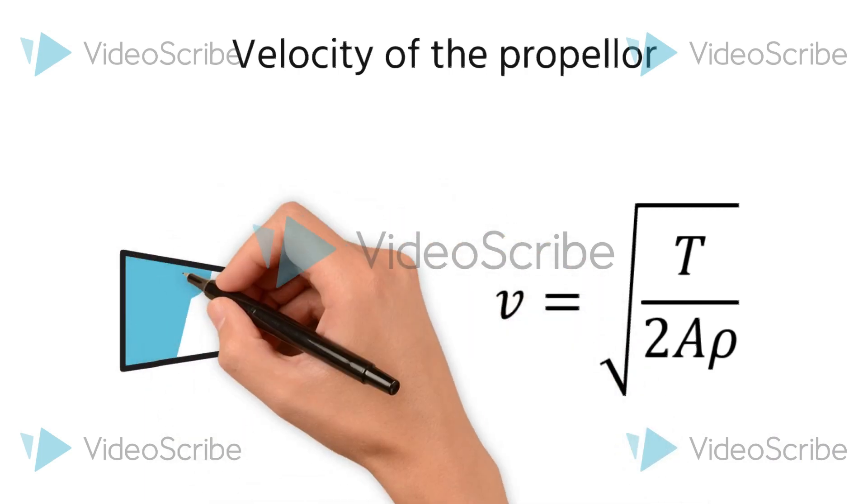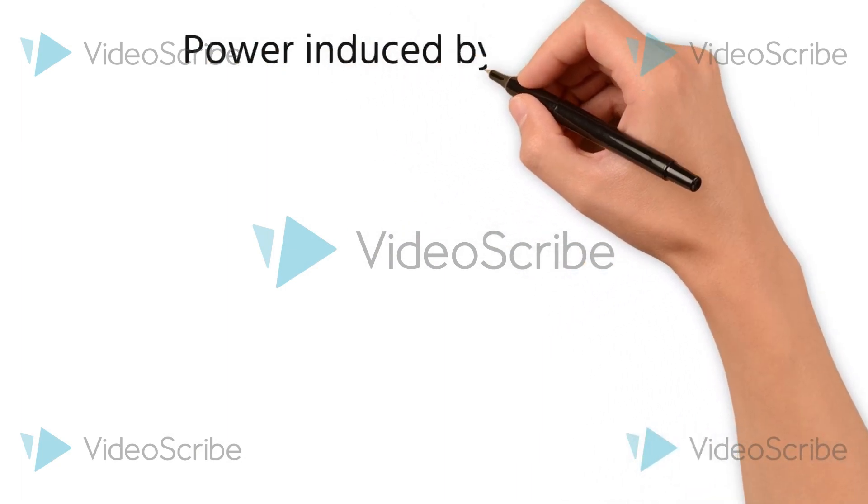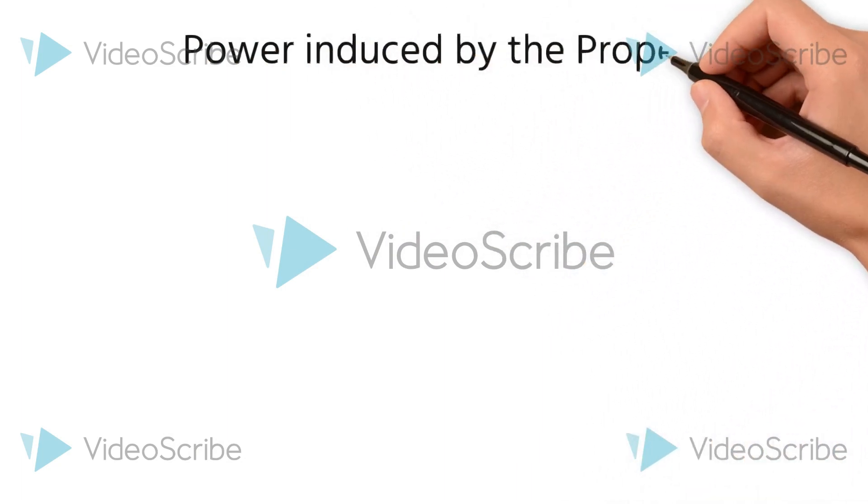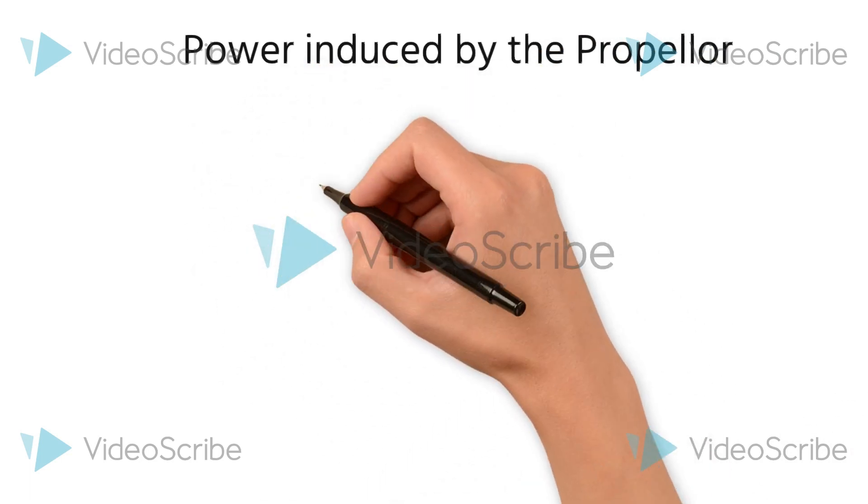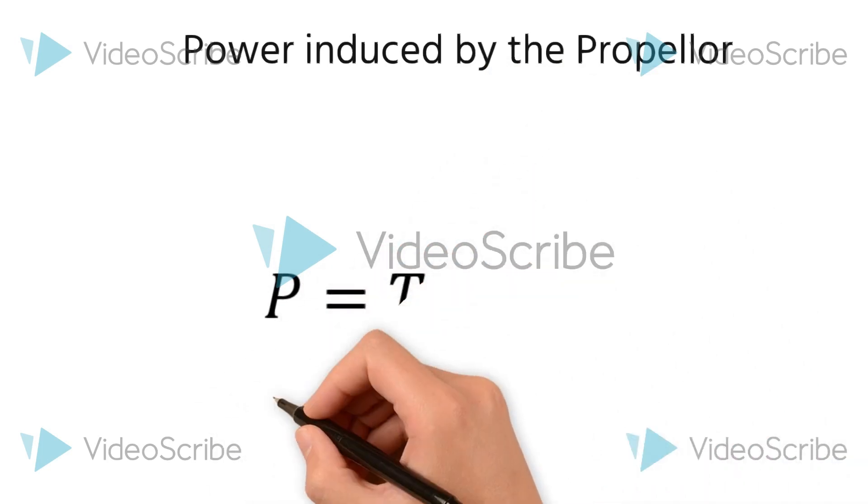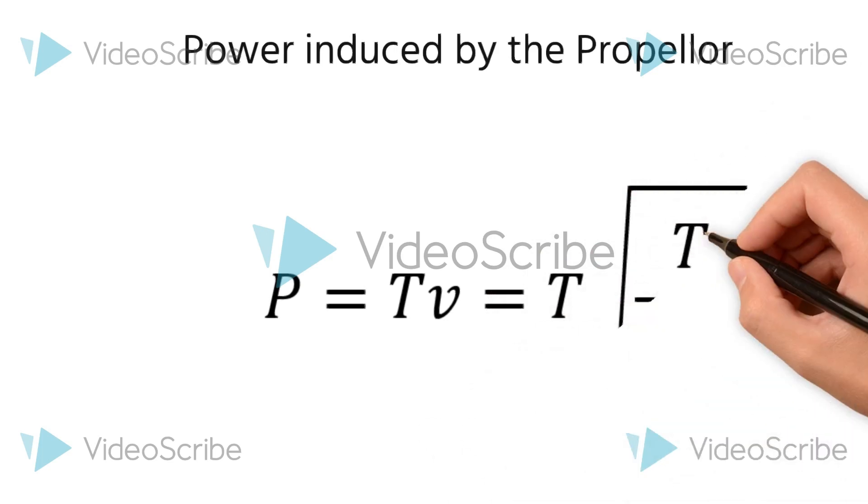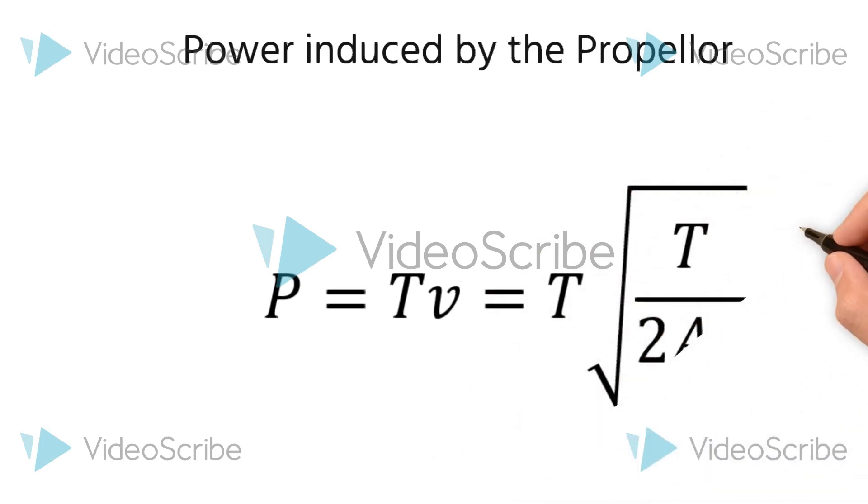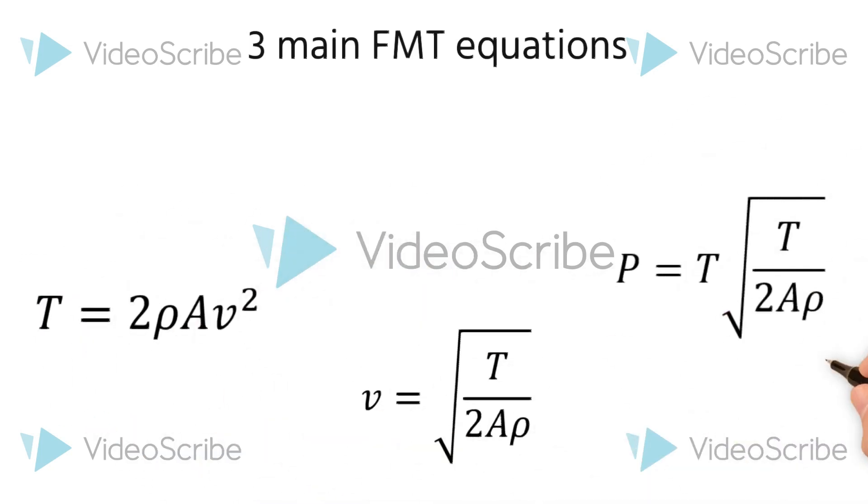Now in order to calculate the power of the propeller, it is nothing but thrust times velocity. As we have recently derived the values of thrust and velocity, we substitute them in. Therefore it becomes T multiplied by √(T/2ρA). So these are the three main equations that the Froude momentum theory gives us.